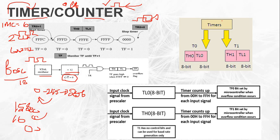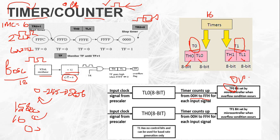The timer uses a 16-bit register. There are two 16-bit timer registers: T0 and T1, each made up of an 8-bit high byte (TH) and an 8-bit low byte (TL), giving higher-order bits and lower-order bits.